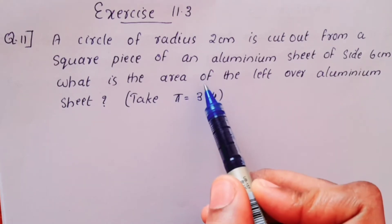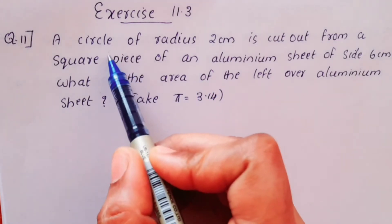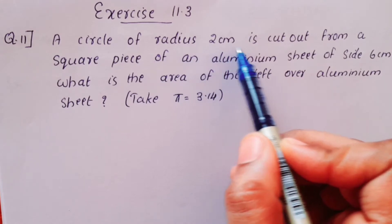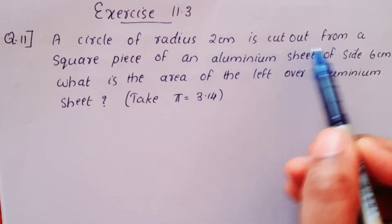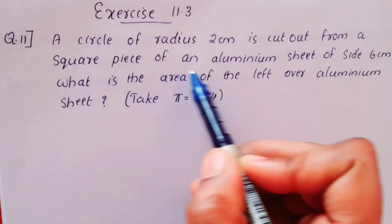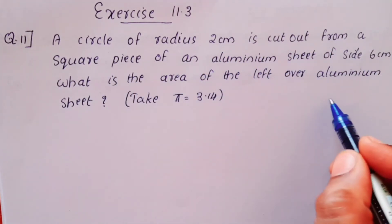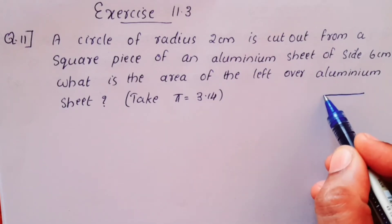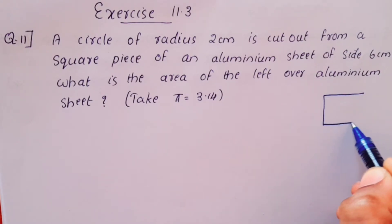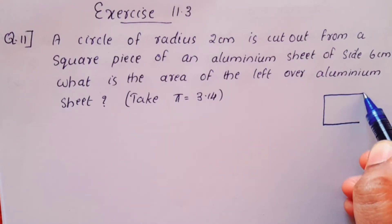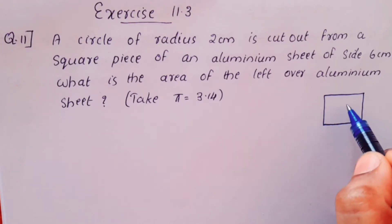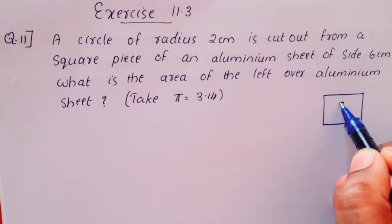We are using a picture to illustrate: a circle of radius 2 cm is cut out from a square piece of aluminium sheet. This is the square aluminium piece, and this is the circle of radius 2 cm.